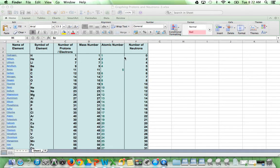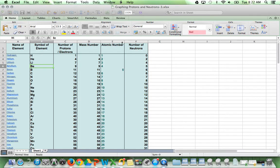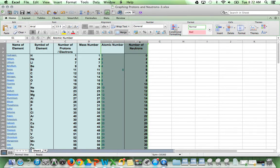Now what we're going to do is graph this data. We're going to graph protons on the x-axis and number of neutrons on the y-axis. The number of protons is the same as the atomic number, so we'll be focusing on these two columns.